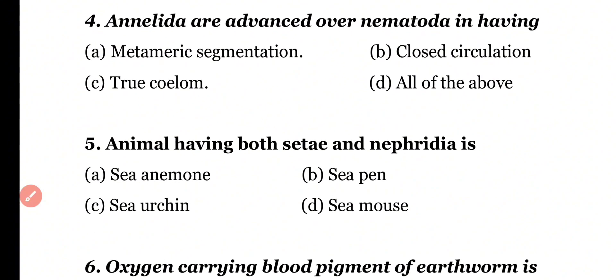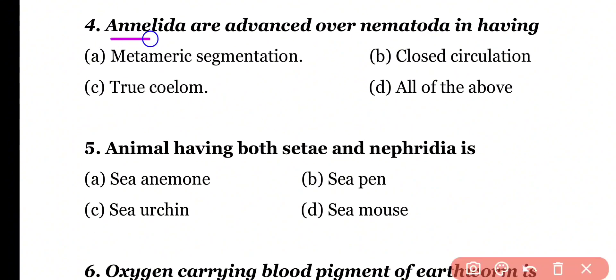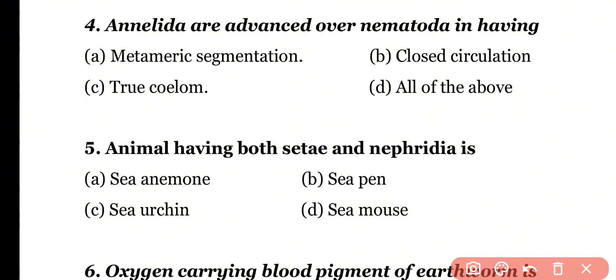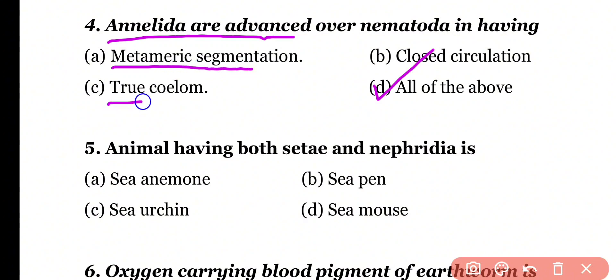Question number 4. Annelida are advanced over Nematoda in having: metameric segmentation, closed circulation, true coelom, or all of the above. Correct answer is option D. Annelida are more advanced than Nematoda because they have metameric segmentation, true coelom, as well as a closed blood circulatory system.